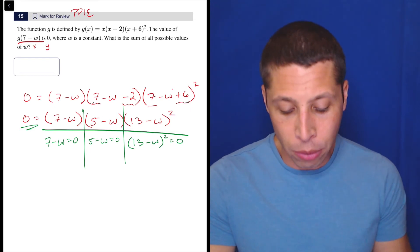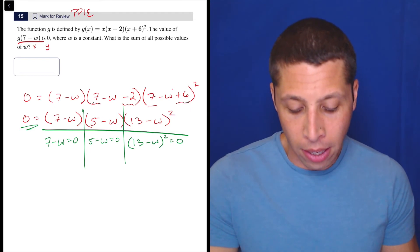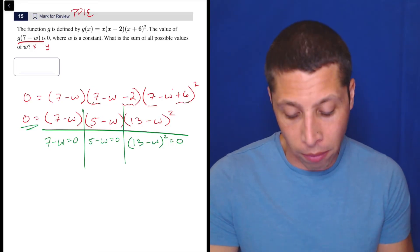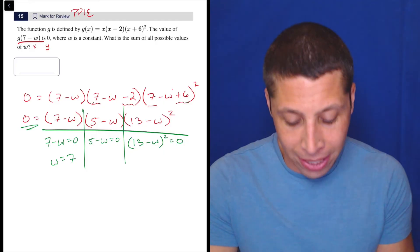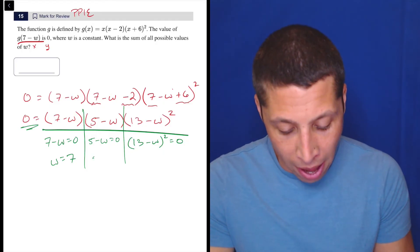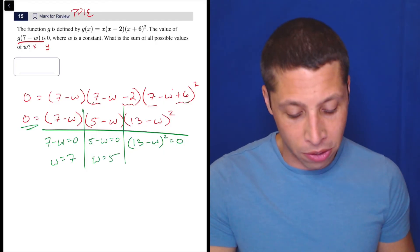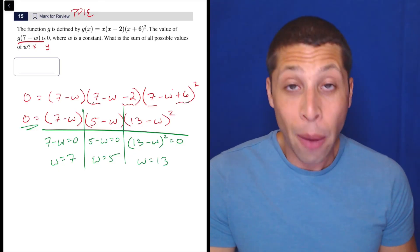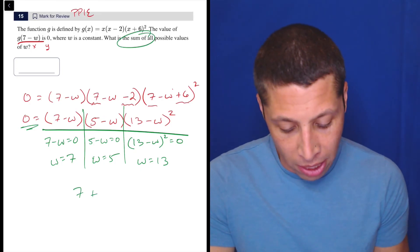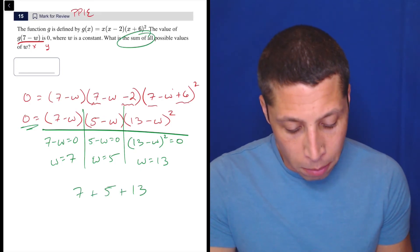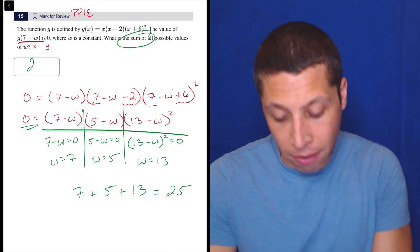We're just going to say, what value of w would give me a 0 if I plugged it in for the first part? So you can either do the algebra and move it around, or you can just kind of realize that 7 minus 7 is equal to 0, 5 minus 5 is equal to 0, and 13 minus 13 is equal to 0. Okay, so now we have all the possible solutions here. What is the sum of them all? That means add them up. So 7 plus 5 is 12 plus 13 is 25. Done.